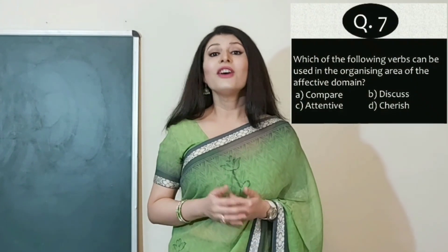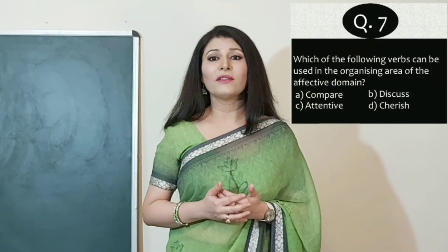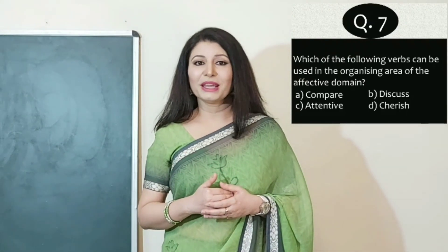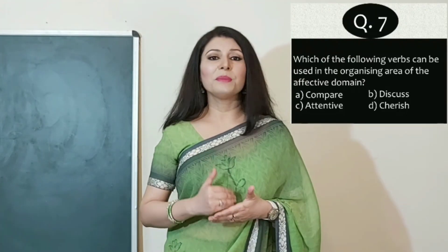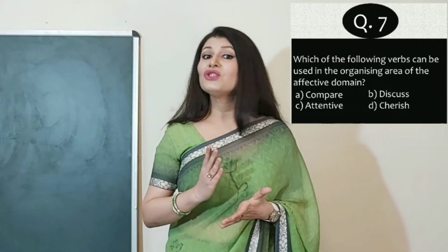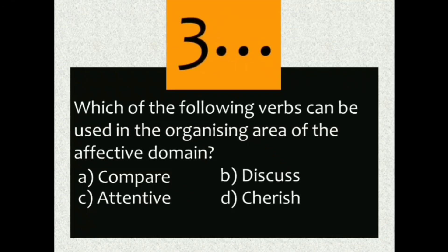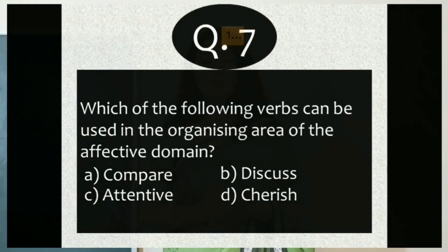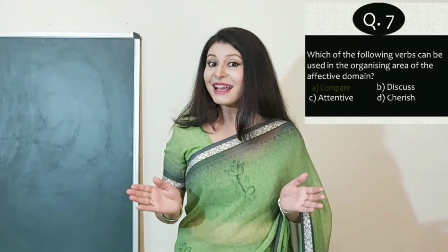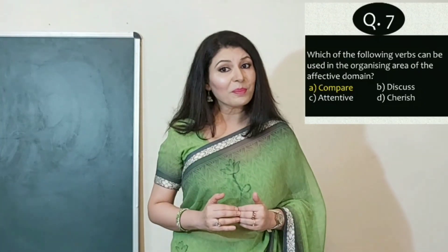Question 7: Which of the following verbs can be used at the organizing level of the affective domain? A) Compare, B) Discuss, C) Attentive, or D) Cherish. The answer is A — compare. At the organizing level, the learner compares different values and organizes them according to their priority.